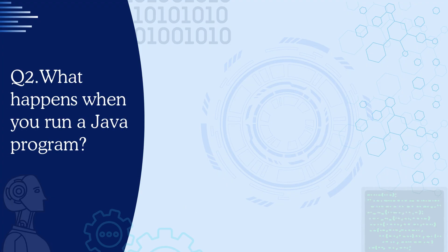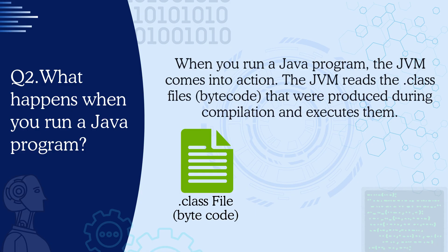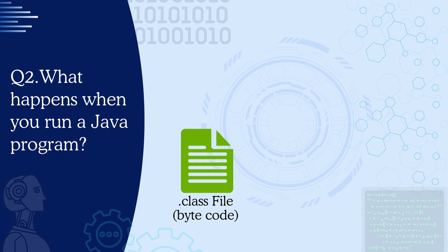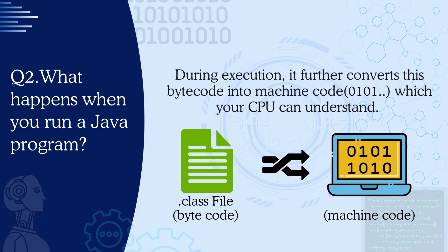Question 2: What happens when you run a Java program? When you run a Java program, the JVM comes into action. The JVM reads the .class files that were produced during compilation and executes them. During execution, it further converts this bytecode into machine code which your CPU can understand. Finally, the program runs and the output is produced.